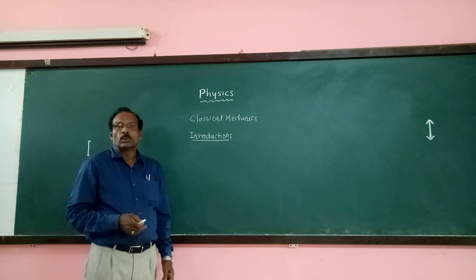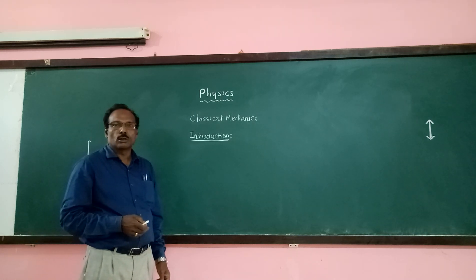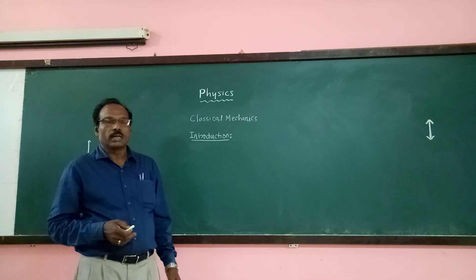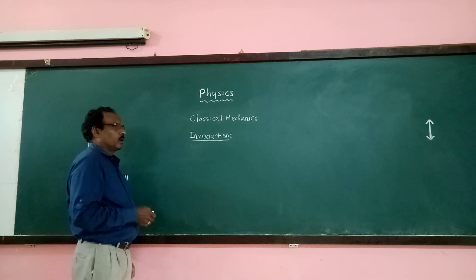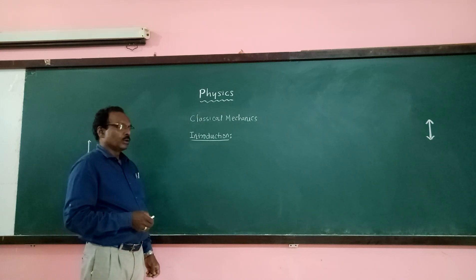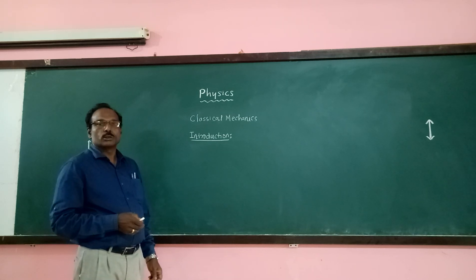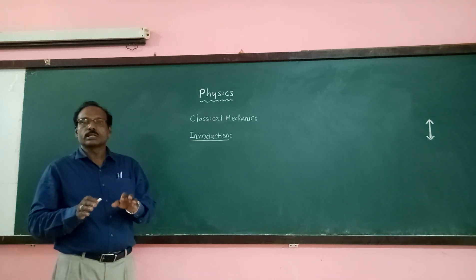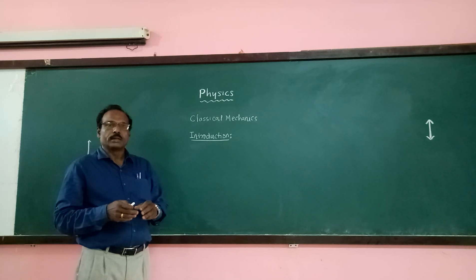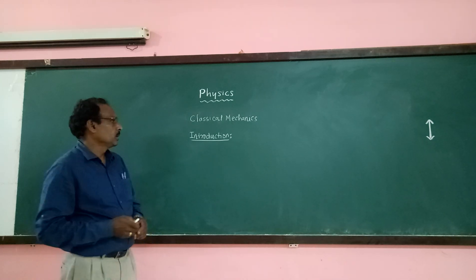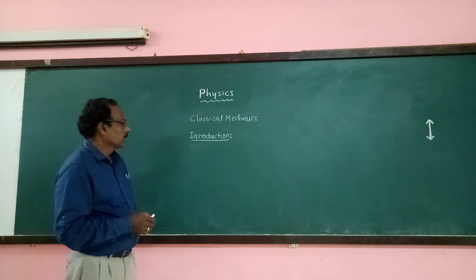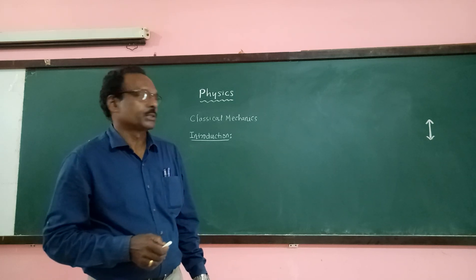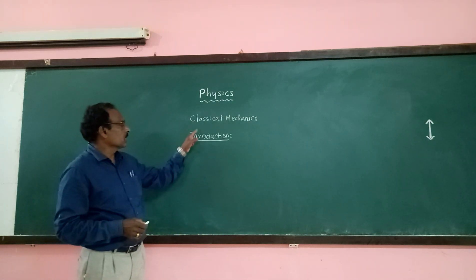Newton proposed his famous laws of mechanics in the year 1687. Together, mechanics based on Newton's laws of motion and the alternative methods proposed by others — Lagrangian, Hamiltonian, and others — is called classical mechanics.